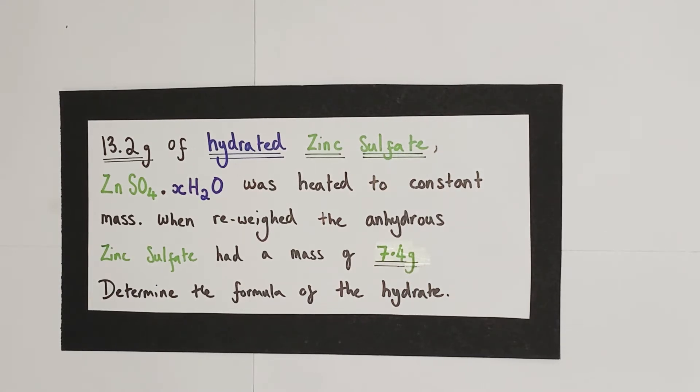First of all you think about how do we work out how many grams of water was lost when this hydrated salt was heated. Well actually all we need is these two numbers. 13.2 grams represents the mass of the salt with the water. 7.4 grams represents the mass of the salt without the water.